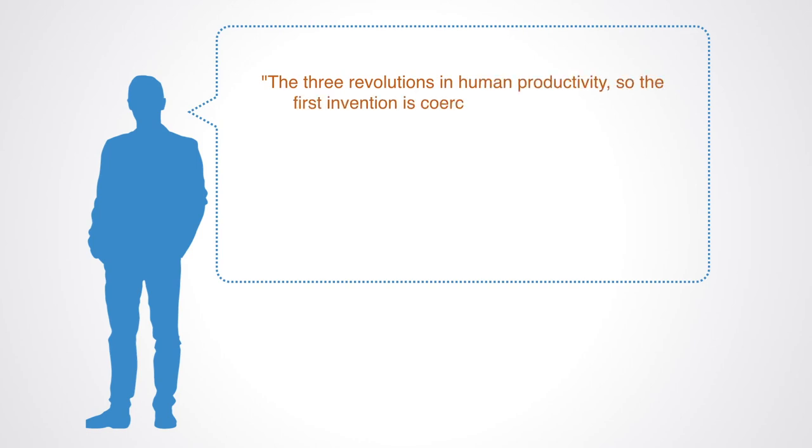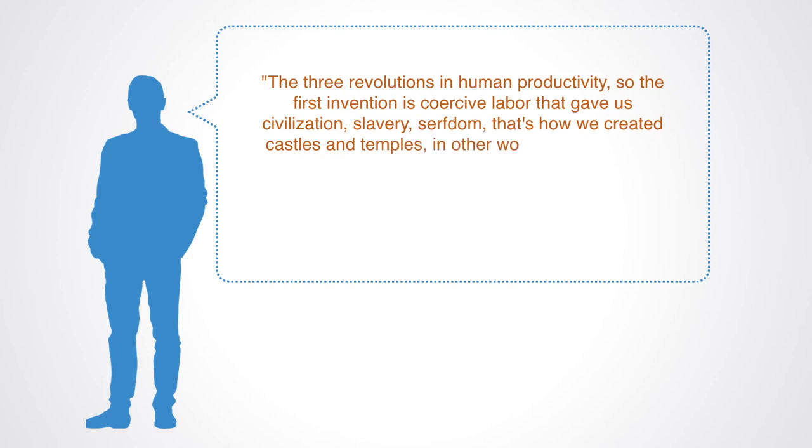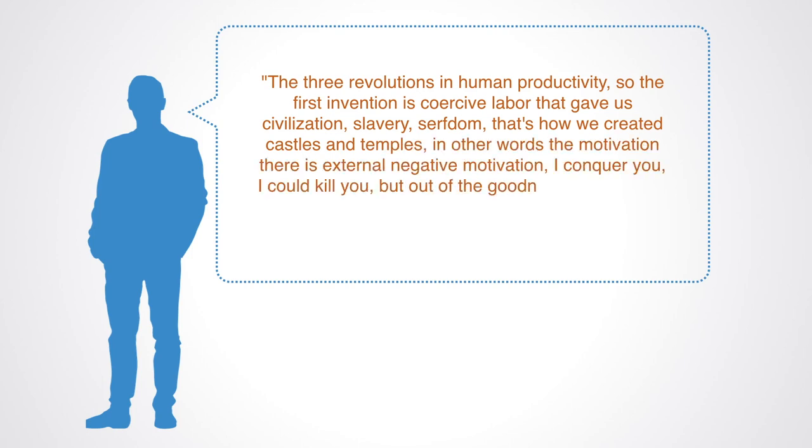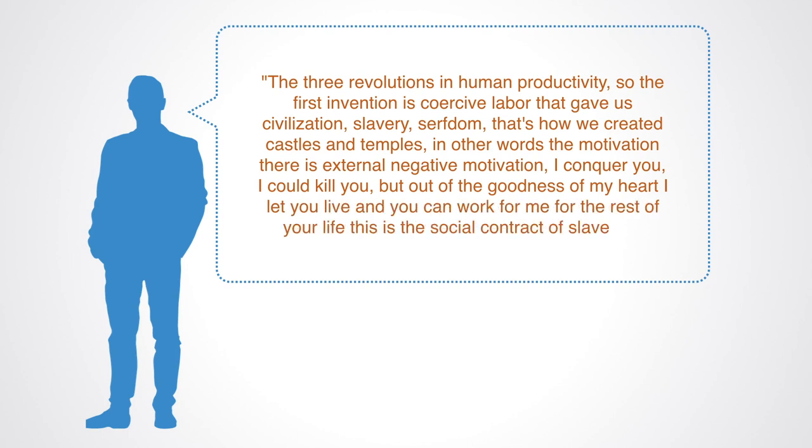Michael Bowens of the P2P Foundation describes this well when he says the three revolutions in human productivity. The first invention is coercive labor that gave us civilization, slavery and serfdom. That's how we created castles and temples.